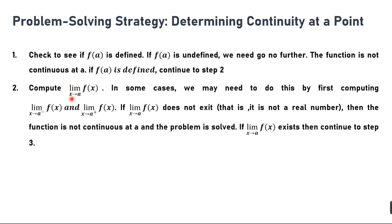Compute the limit as x approaches a of f(x). In some cases we may need to do this by first computing the left limit and right limit. If the limit as x approaches a of f(x) does not exist — that is, it is not a real number — then the function is not continuous at a and the problem is solved. If the limit exists, then continue to step three.